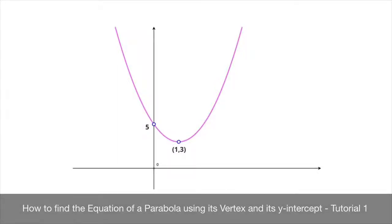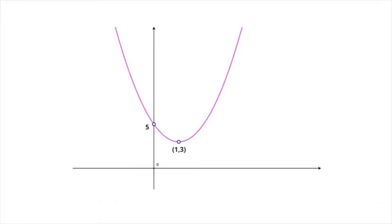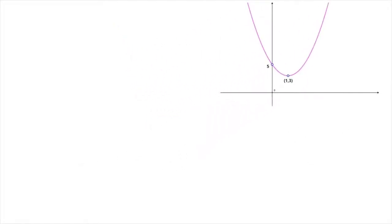We now learn how to find the equation of a parabola using the coordinates of its vertex. When we say vertex, we're referring to either a minimum or a maximum point on the parabola. Looking at the parabola we see here, this parabola's vertex is a minimum point. Say we're asked to find this parabola's equation. Let me start by moving this parabola to the side, and now we can get started.